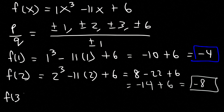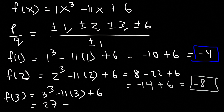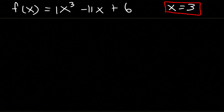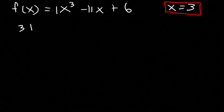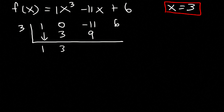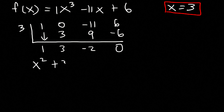f(3) = 3³ - 11(3) + 6. 3³ = 27, 11 × 3 = 33, and 27 - 33 = -6, then -6 + 6 = 0. So x = 3 is the first zero. Now for synthetic division, the coefficients are 1, 0 (for the missing x² term), -11, and 6. Using 3: 3 × 1 = 3, 0 + 3 = 3, 3 × 3 = 9, -11 + 9 = -2, 3 × -2 = -6, and 6 + (-6) = 0. The result is x² + 3x - 2.